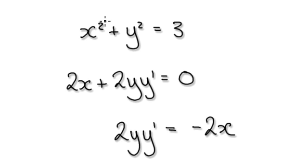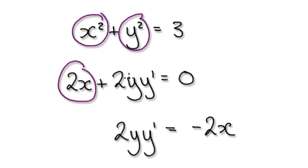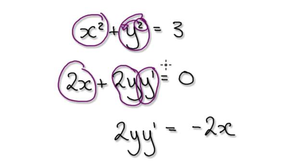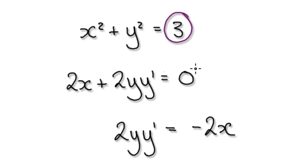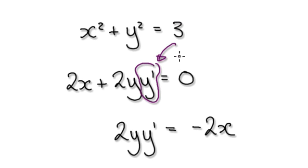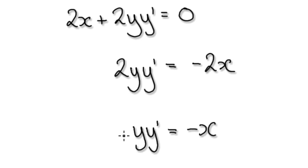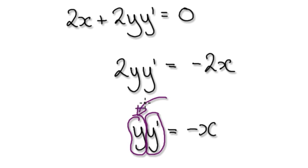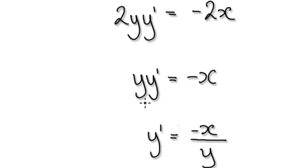So to do this, differentiate this — that will give you 2x. Differentiate this next term; remember the 2 goes down, that will give you this, but then you've got it times by dy/dx. And then differentiate this term, it will give you this. So take away 2x from both sides, and then these two will cancel out, giving you this. So now you've got one thing multiplying with another thing, so divide both sides by y — that will give you this.